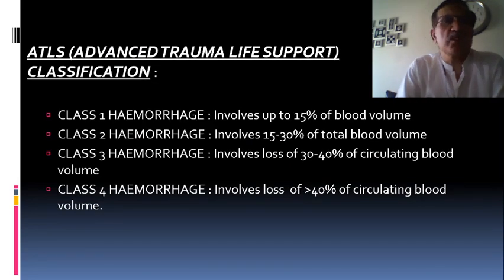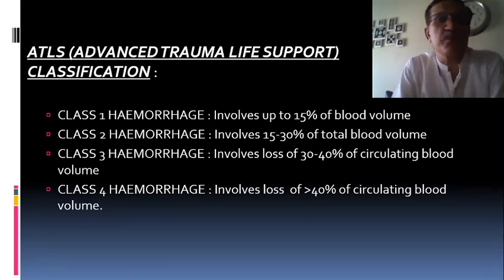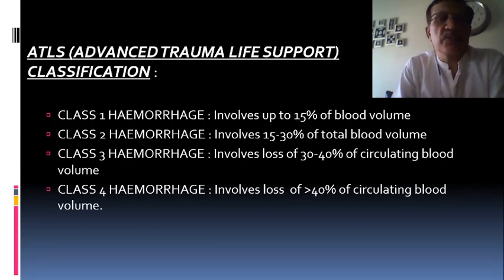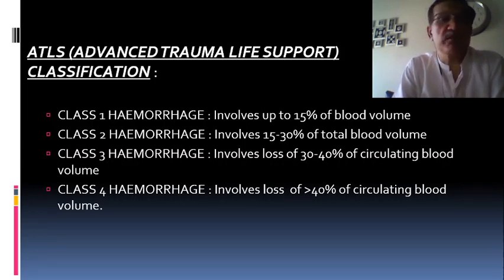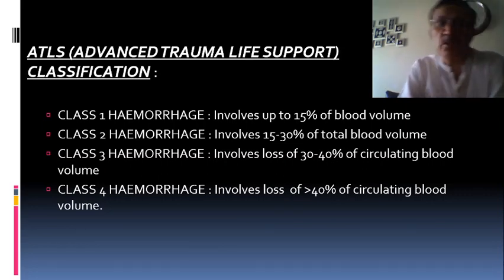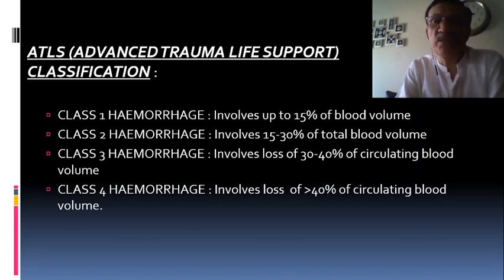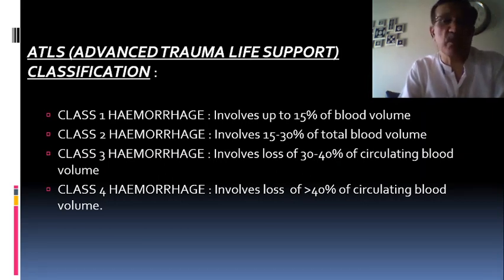According to the Advanced Trauma Life Support (ATLS) classification: Class 1 hemorrhage involves up to 15% of blood volume. Class 2 involves about 15% to 30% of total blood volume. Class 3 involves loss of 30% to 40% of the circulating blood volume.